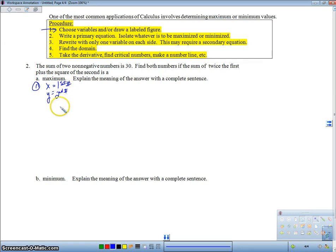Then the second step is going to be to write my primary equation. So my primary equation here is going to be that s, which is the sum, is equal to 2x plus y squared, and I get that from my directions. Well, again, remember that my third step is I need to rewrite with only one variable on each side. So I've got to figure out one of these that I want to have and switch it, using some other information by making a secondary equation.